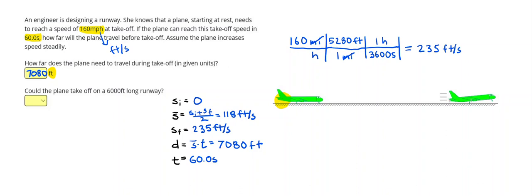Then the question asks, could the plane take off on a 6,000 foot long runway? So we've just figured out that the plane needs 7,080 feet to take off. A 6,000 foot runway would end like right here. So the plane would go off the runway before it was able to take off. Anything longer than 7,080 feet would be fine, but anything shorter is not going to be safe. So the answer is no.